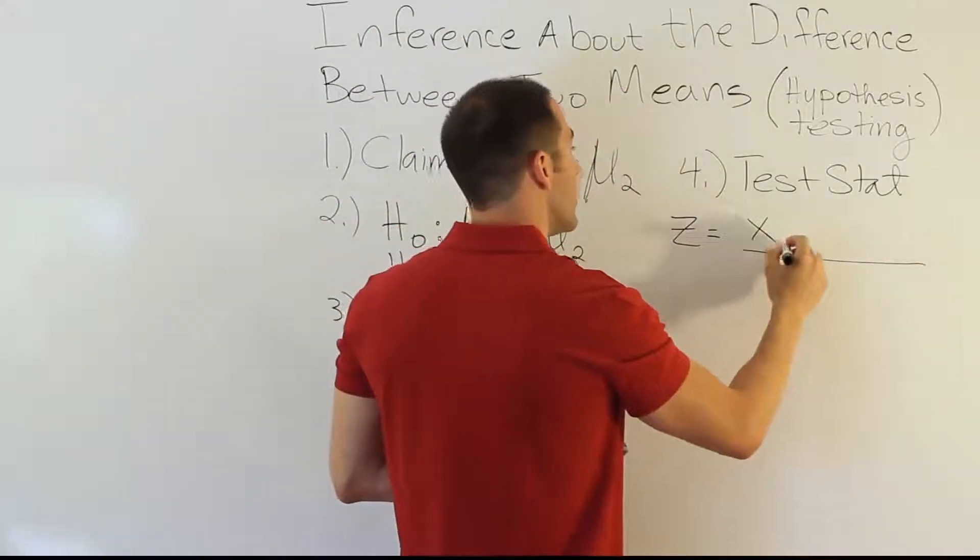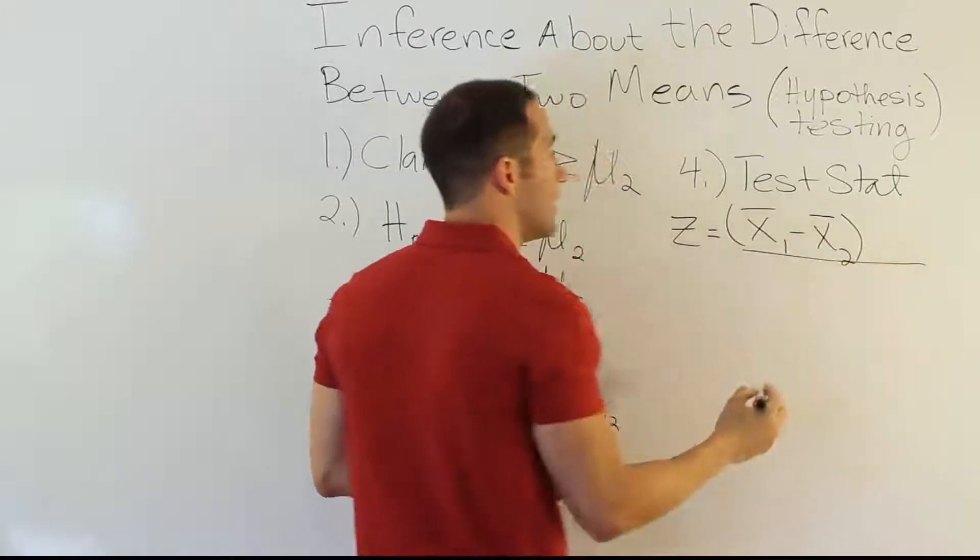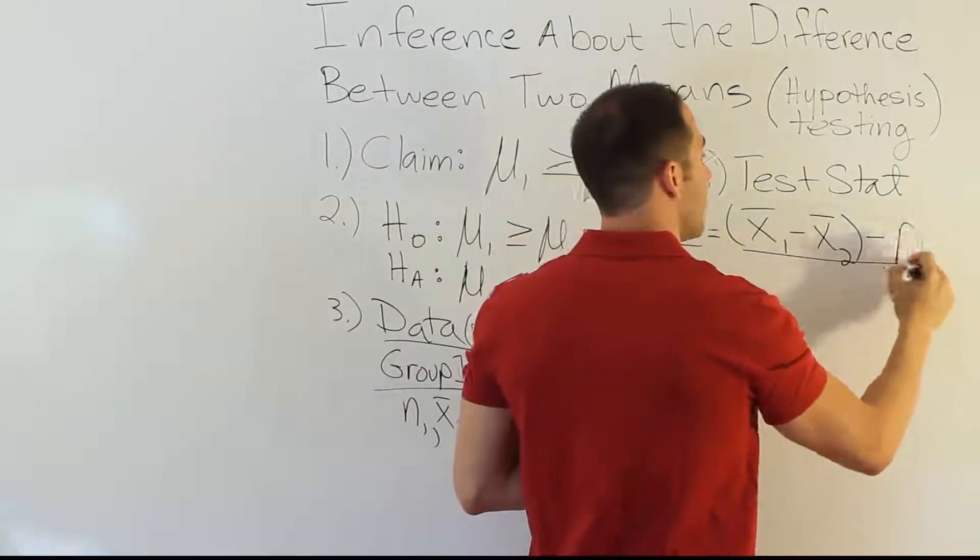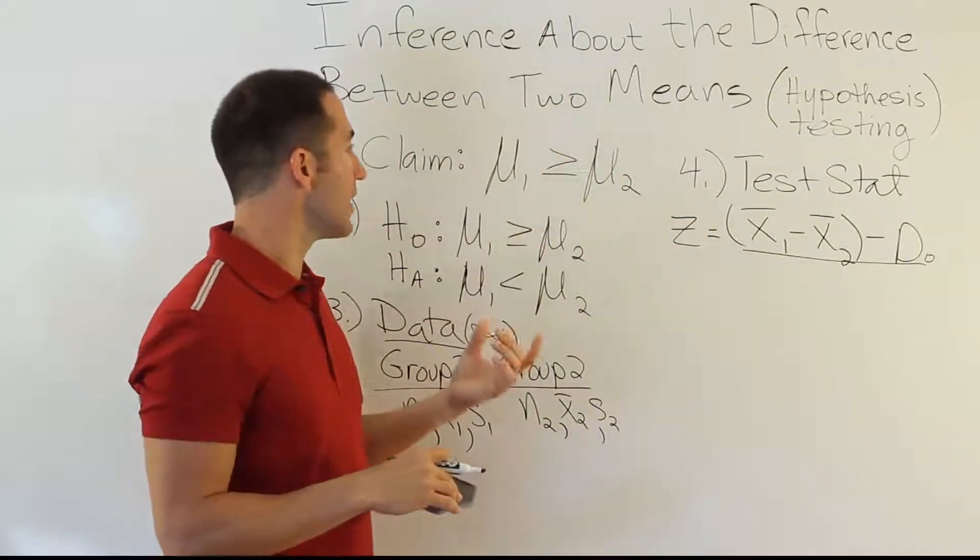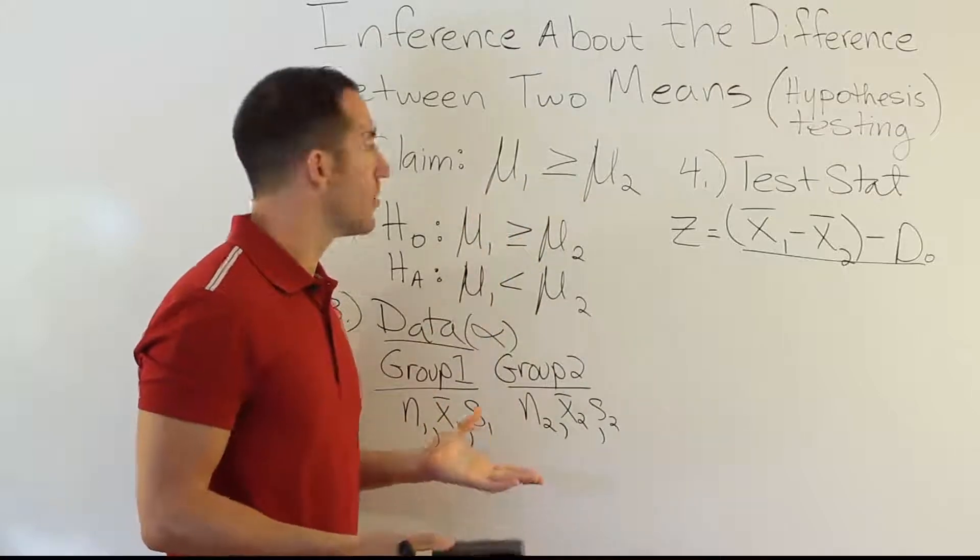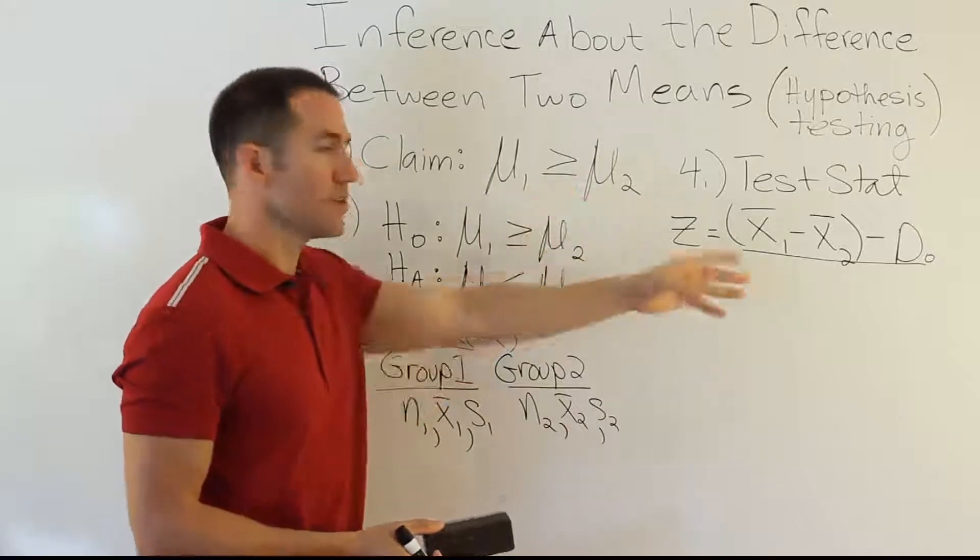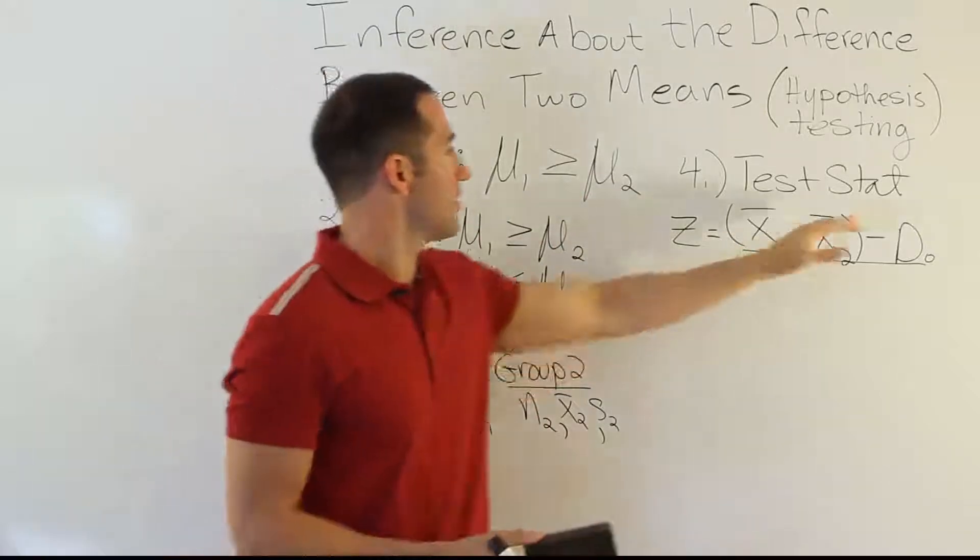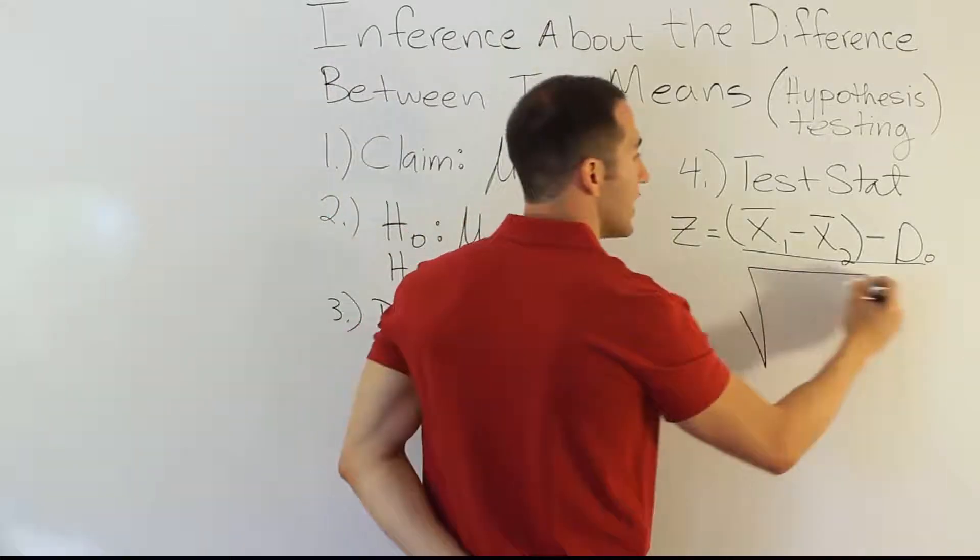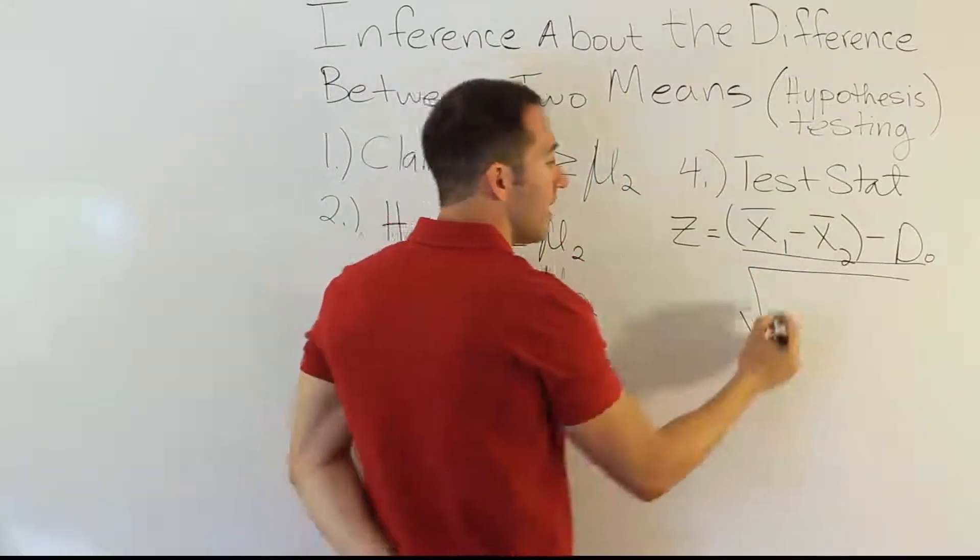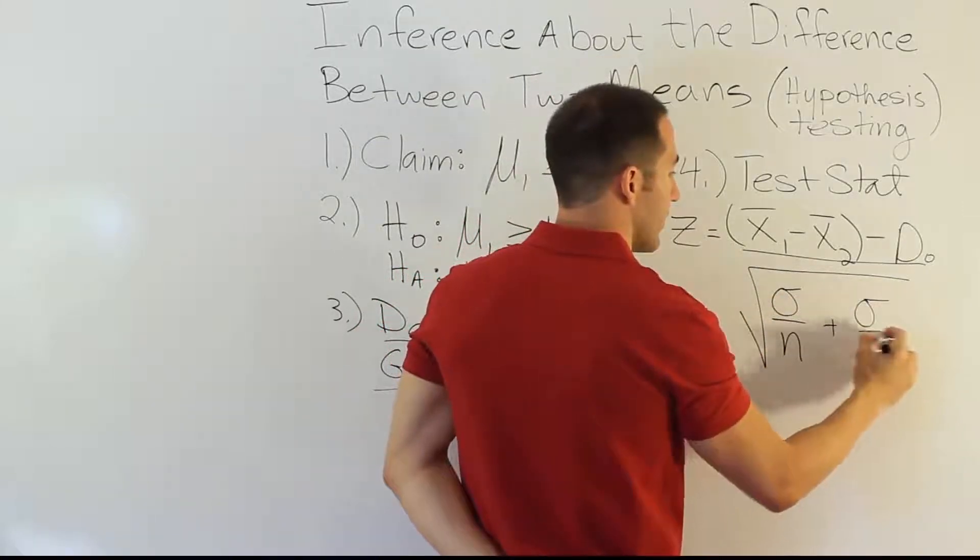And then the formula actually becomes this. It's going to be X bar one minus X bar two. So that's the first part of it. And then you're going to subtract off that difference, D sub zero, that we would have had from the claim. And in most cases, in the elementary classes, it's just zero. The number there is just zero. So if you don't see a number in the claim anywhere, you just put zero there. So a lot of times, you don't even have to worry about that little part of the formula.